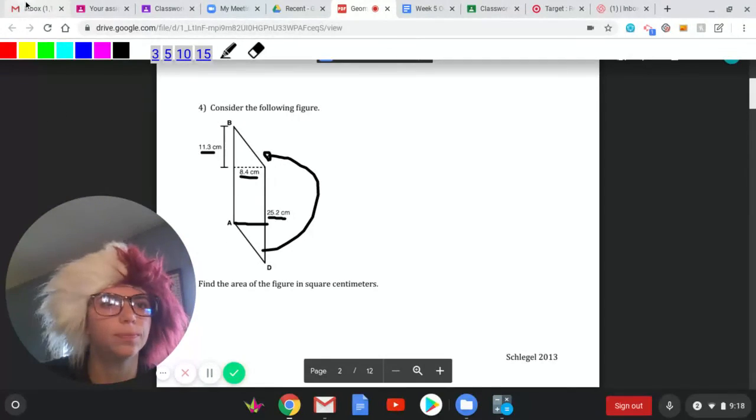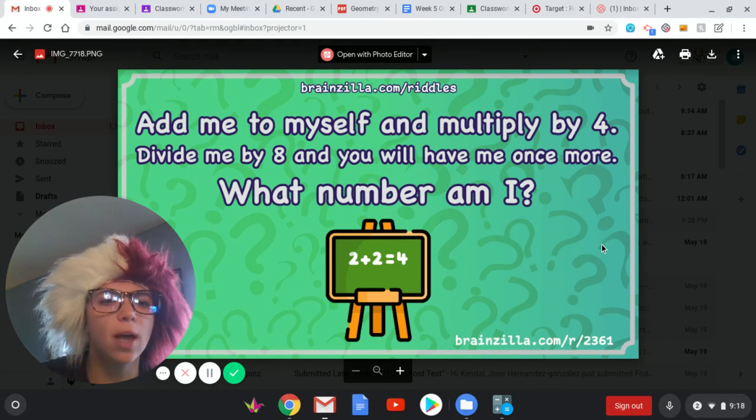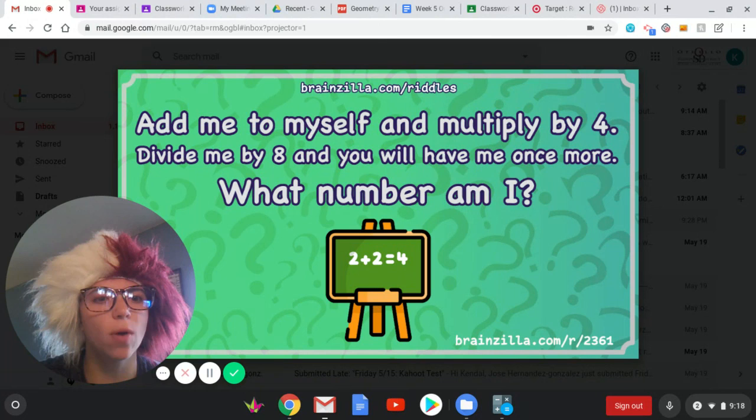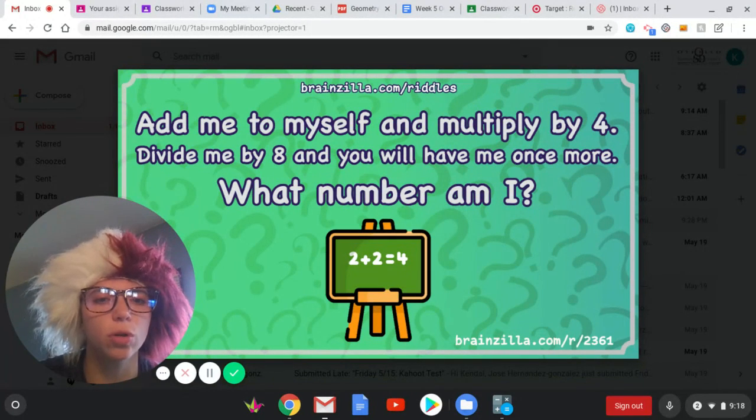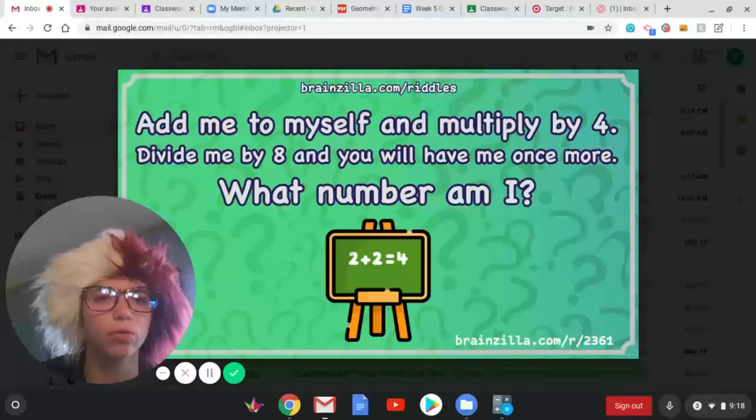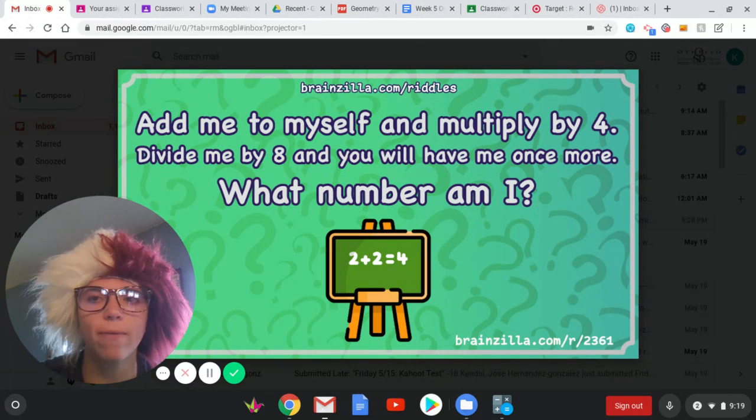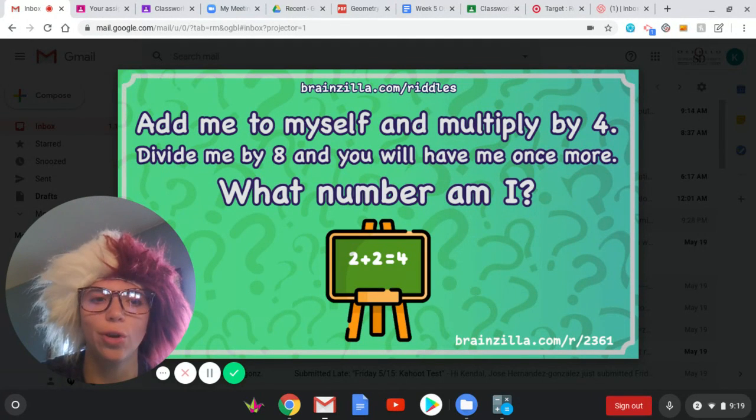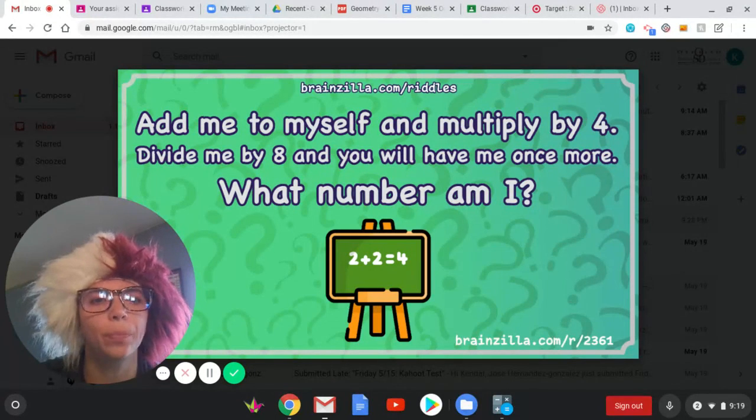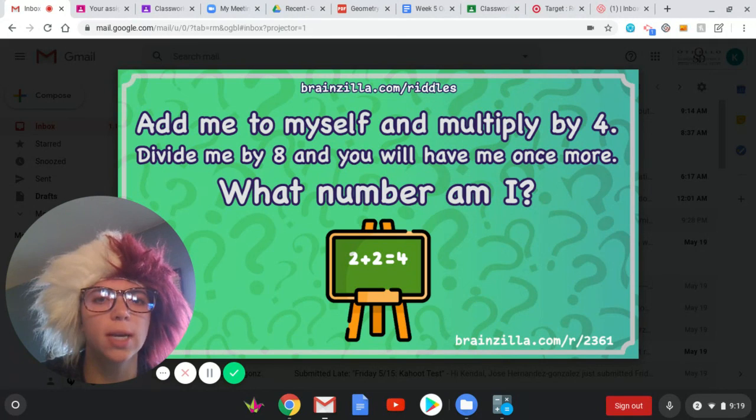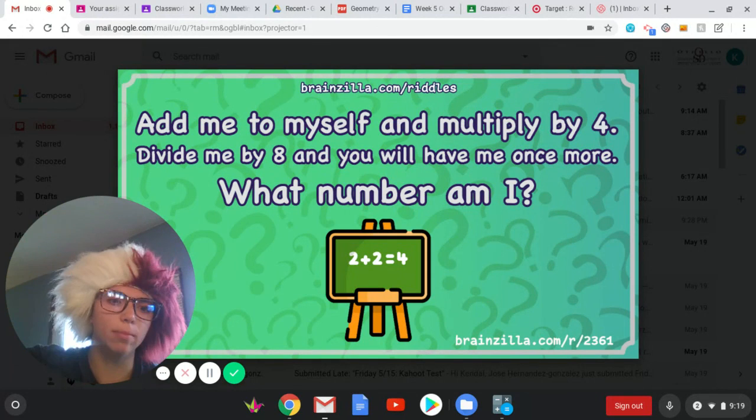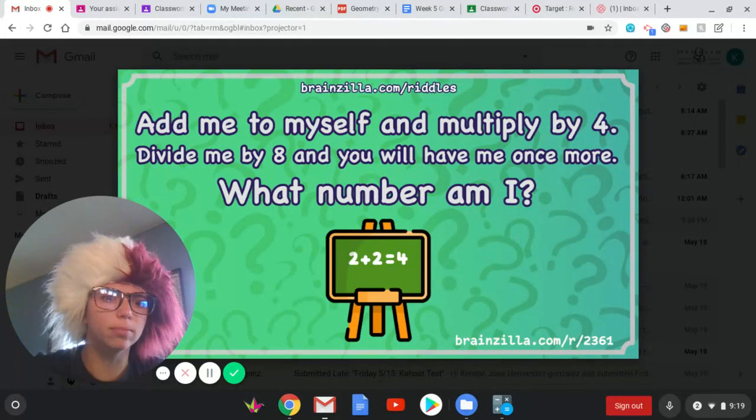Last but not least, the answer to the riddle. Add me to myself and multiply by 4. Divide me by 8, and you will have me once more. What number am I? The answer is you are any number. What? Let's test it out. I'm going to use the number 2. Add me to myself. 2 plus 2. That equals 4. Multiply by 4. So, I've got 4. Now, I multiply it by 4. I get 16. Divide me by 8, and you will have me once more. So, I have 16 divided by 8. Do I end up back at 2? I sure do. Let's try it with another one. Let's do it with 3. 3 plus 3. So, add me to myself. 3 plus 3 is 6. Now, I take 6 and multiply it by 4 to get 24. Now, divide me by 8. 24 divided by 8, and I end up with 3. And you will have me once more. Mind blown. Crazy. It spiked my hair up. It's all crazy like.